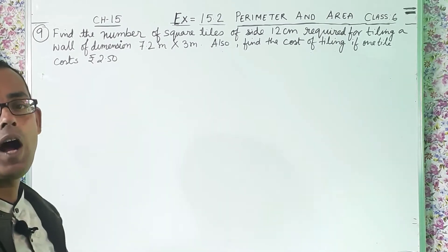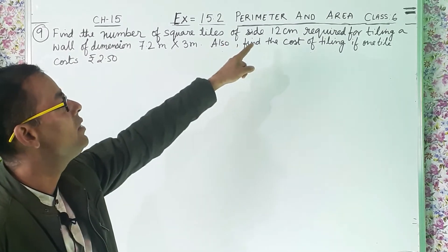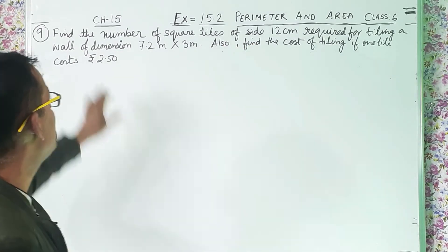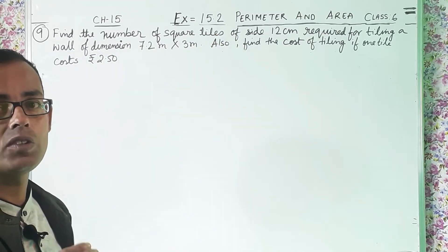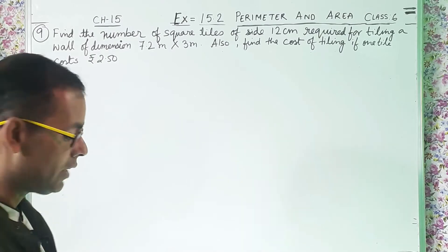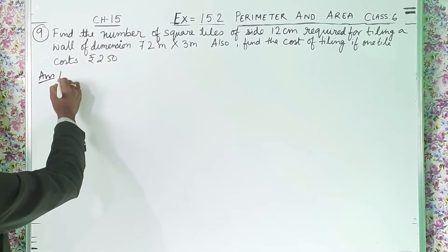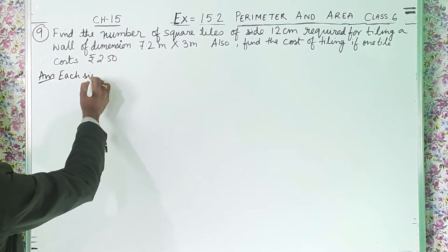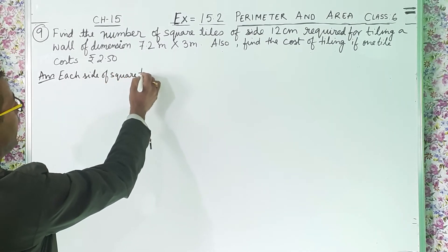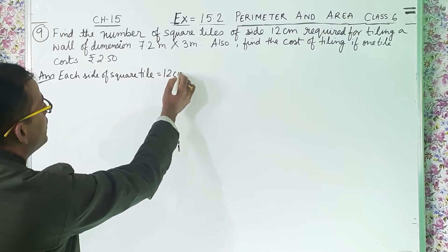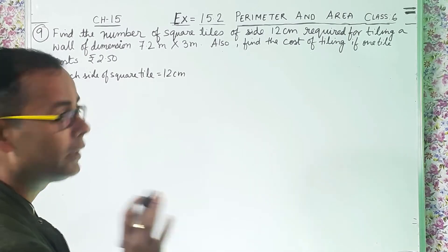We have to find out how many square tiles are required, of side 12 centimeter. That means, find the number of square tiles whose side is 12 centimeter. So each side of the square tile is given to us. Each side of square tile is 12 centimeter. This information is given to us.